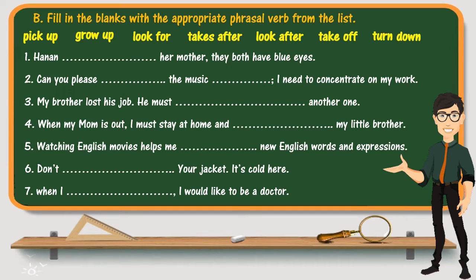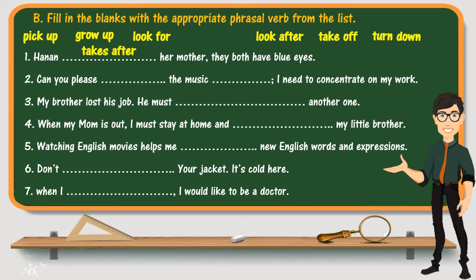Let us correct the task now. The first sentence says: 'Hanan ___ her mother — they both have blue eyes.' The key information is that they both have blue eyes, meaning they take after each other — they look like each other. So the answer is: Hanan takes after her mother.